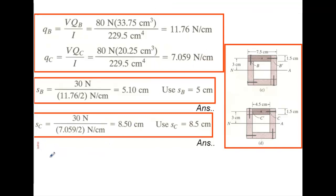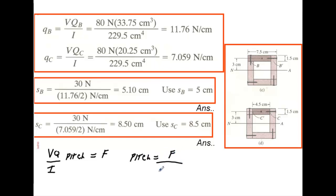Recall that VQ/I × pitch = force in each fastener. Solving for pitch: pitch = force / (VQ/I). At B: pitch = 30 / 11.76, which gives the maximum spacing at B. At C: pitch = 30 / 7.05, which gives the maximum spacing at C.